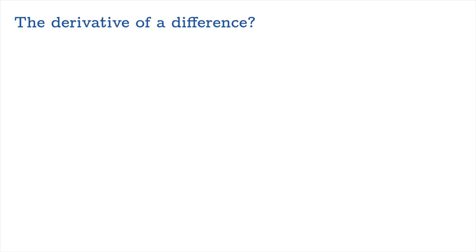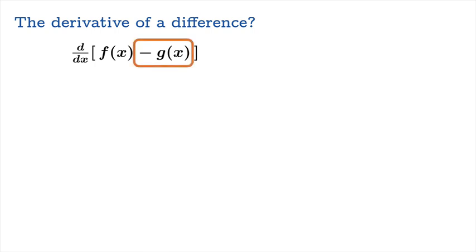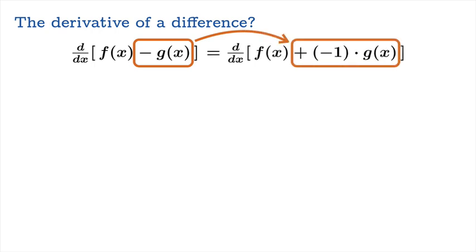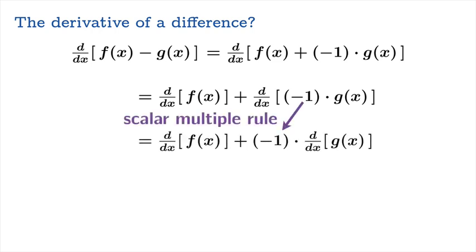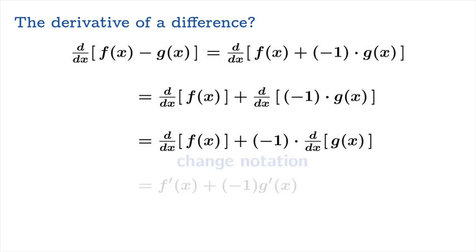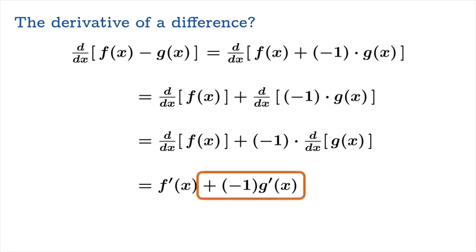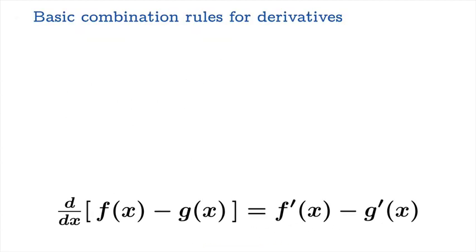Finally, the difference rule. We don't need to go back to the definition of derivative here, because it's just a consequence of the first two rules. When you subtract two functions, you're really adding two functions where the second has been scaled by a factor of negative one. Applying the sum rule and then the scalar multiple rule, we get f′(x) + (−1)·g′(x), which is just f′(x) − g′(x). The derivative of a difference is the difference of the derivatives.